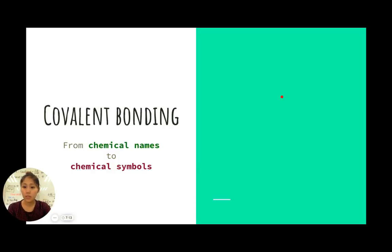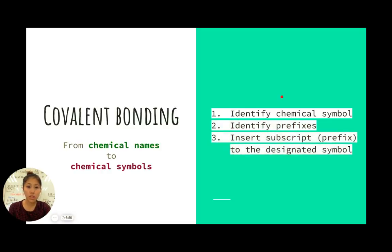Covalent bonds - how do we go from the chemical name to the chemical symbols? How do we change it from a name into a formula? The first step is you identify the chemical symbol. You then identify the prefix, and then you insert the subscript, which becomes the prefix to the designated symbol.